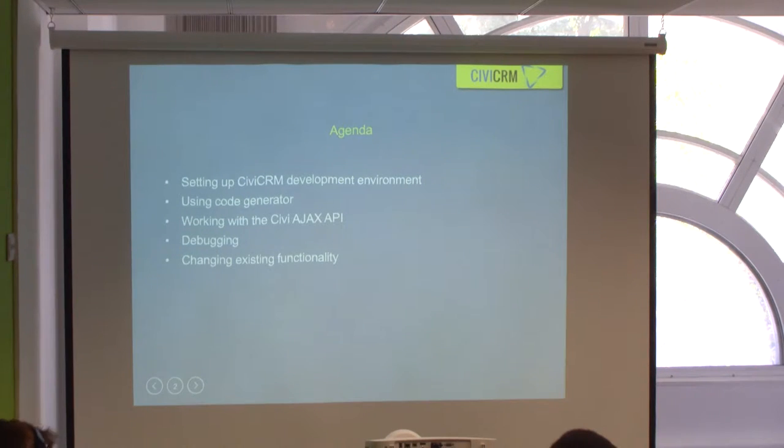Here is the brief agenda for this session. I am going to quickly walk through how you can set up basic CVCM on your machine. Then we are going to look at some tools available in CVCM to generate basic code without needing to know each step — code generators. Then we'll look at a simple API-driven action: how you can call the Ajax API, get responses, a quick example. Some debugging techniques and how to enable debugging. And we'll look at changing some existing functionality in CVCM based on a use case.